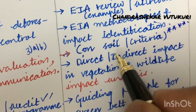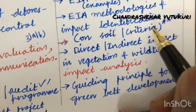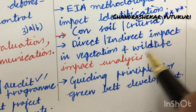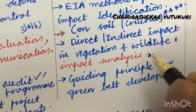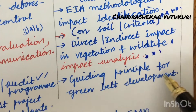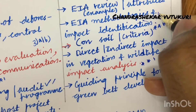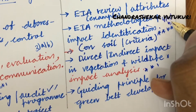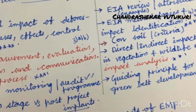Soil properties related to EIA methodology need to be worked on. The direct and indirect impacts on vegetation as well as wildlife are also said to be a very important gunshot question for impact analysis. Guiding principles for green belt development — from this part we can expect 4A as well as 4B.